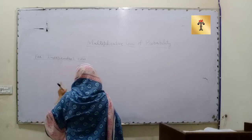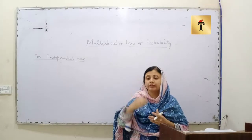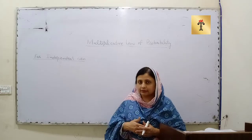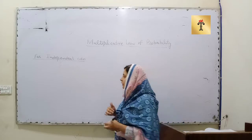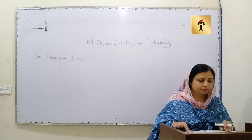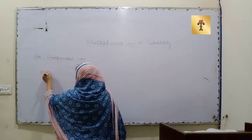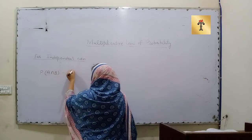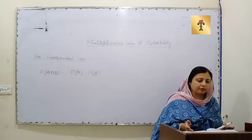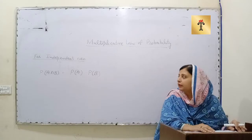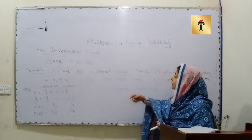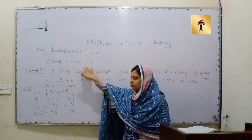First we will cover the independent event case. Two events are said to be independent if the probability of occurrence of event A and B is equal to the probability of A multiplied by the probability of B: P(A∩B) = P(A) × P(B). Simply, if we multiply both probabilities, that is the multiplicative law of probability for independent events.